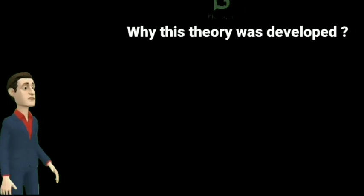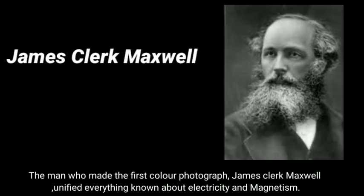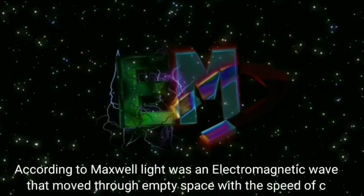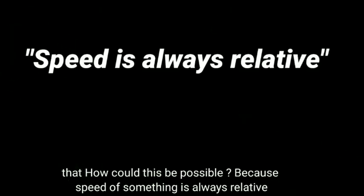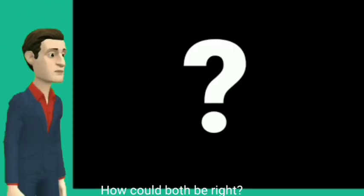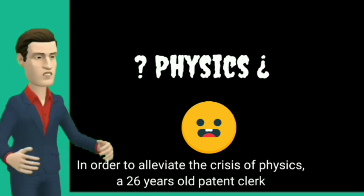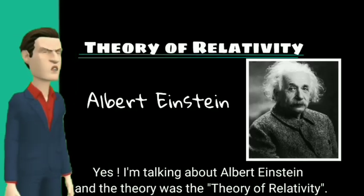Let's discuss why this theory was developed. James Clerk Maxwell, the man who made the first color photograph, unified everything known about electricity and magnetism. According to Maxwell, light was an electromagnetic wave that moved through empty space with a speed of c — that is 3×10⁸ meters per second. He said that of all the things in the universe, it's only light whose speed is constant relative to everything. But from the standpoint of classical relativity, the question naturally arises: how could this be possible? Because the speed of something is always relative. This was a dilemma facing physicists at the turn of the 20th century. How could both be right? The very foundation of physics was facing a crisis. In order to alleviate this crisis, a 26-year-old patent clerk came up with an unforgettable explanation — Albert Einstein — and the theory was the theory of relativity.